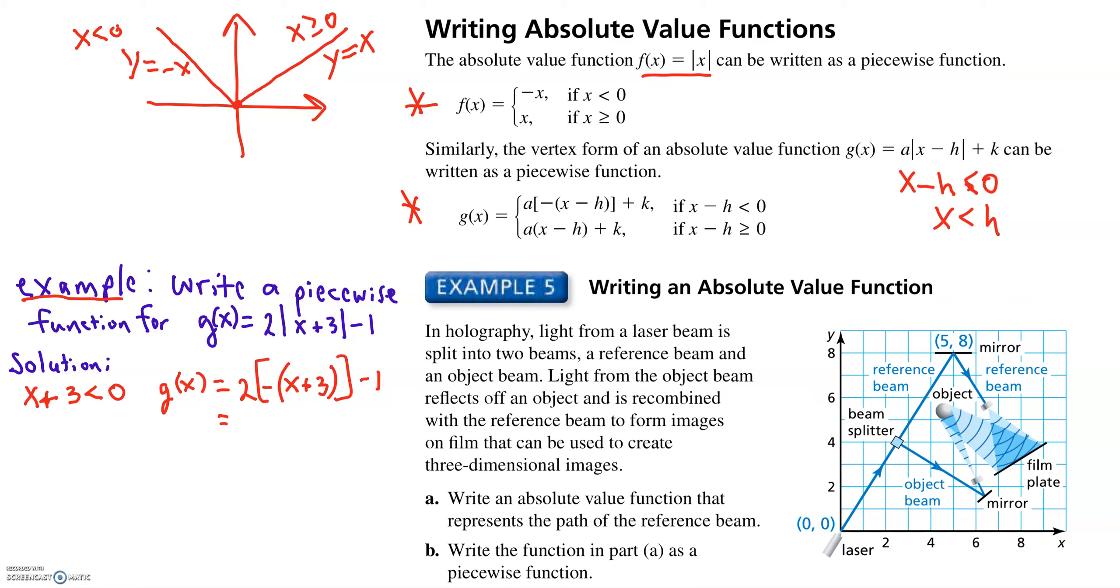Now we're going to simplify that. So we're going to start on the inside, distribute the negative. Now we're going to distribute the 2. Now we're going to combine like terms.